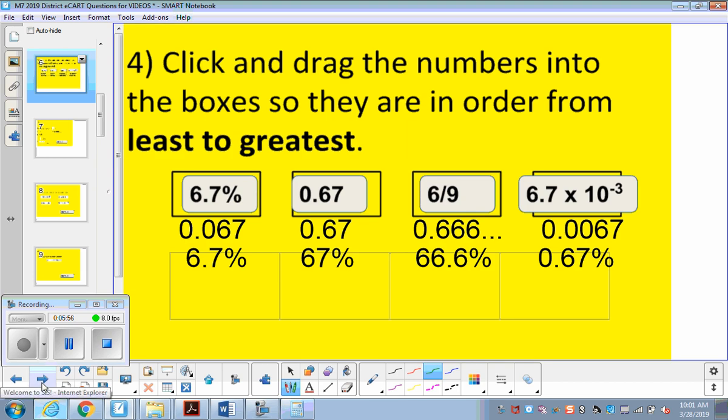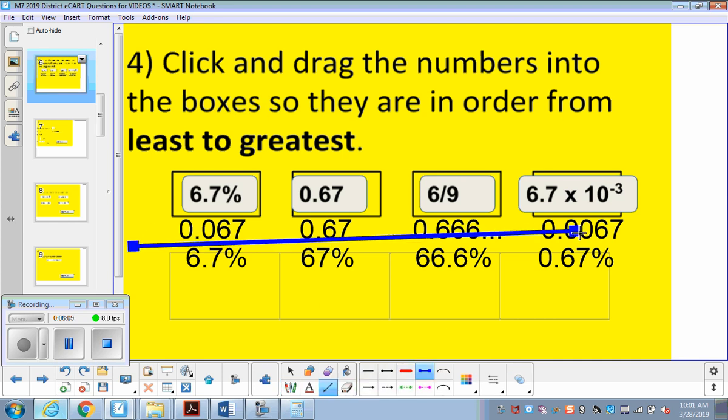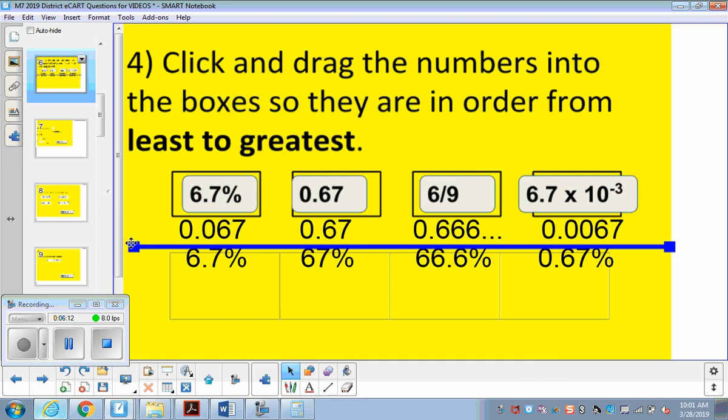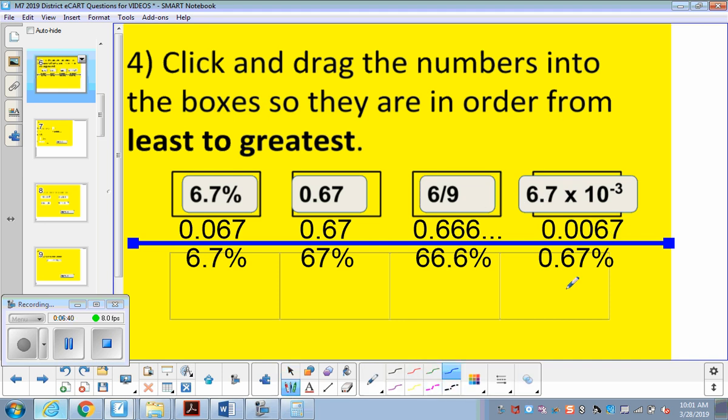We want to click and drag the numbers into the boxes so that they are in order from least to greatest. You have a percent, a decimal, a fraction, and something in scientific notation. I wanted to review a couple different methods with you. First, what I've done is I have just rewritten every answer as a decimal. This 6.7%, I moved the decimal back twice, 1, 2, and that's how I got 0.067. This one was already given as a decimal. Now 6/9 reduces to 2/3 which is the 0.6 repeating. And we reviewed with scientific notation that this decimal is going to move back 1, 2, 3 times. If it was right here in between the 6 and 7, it went back 1, 2, 3, and there's the three zeros.